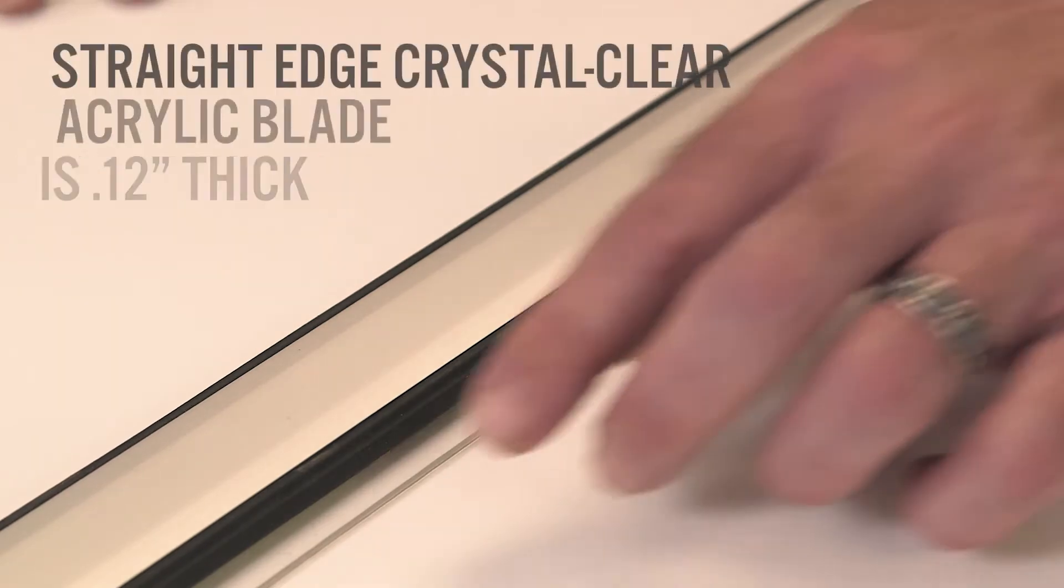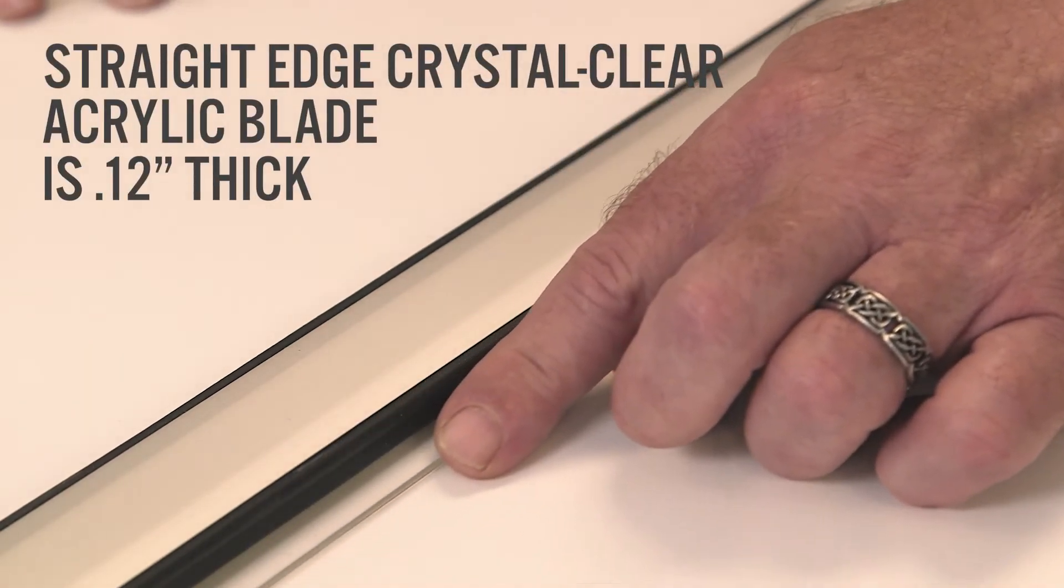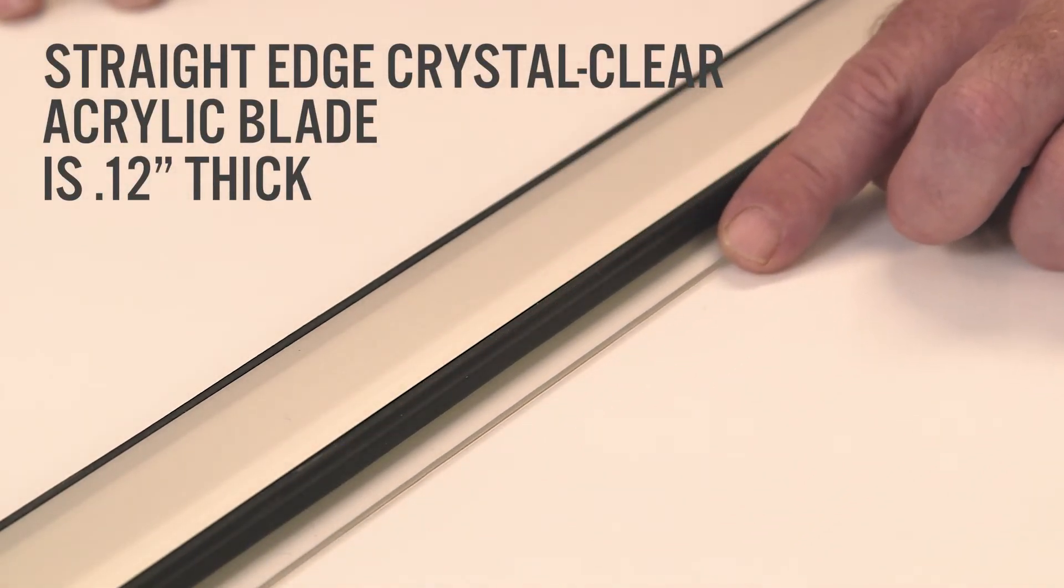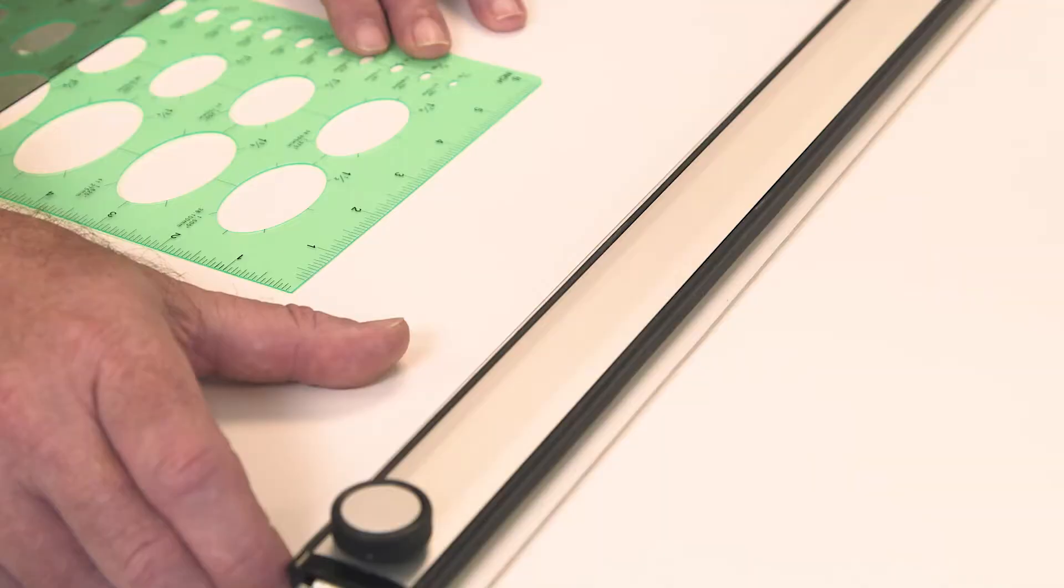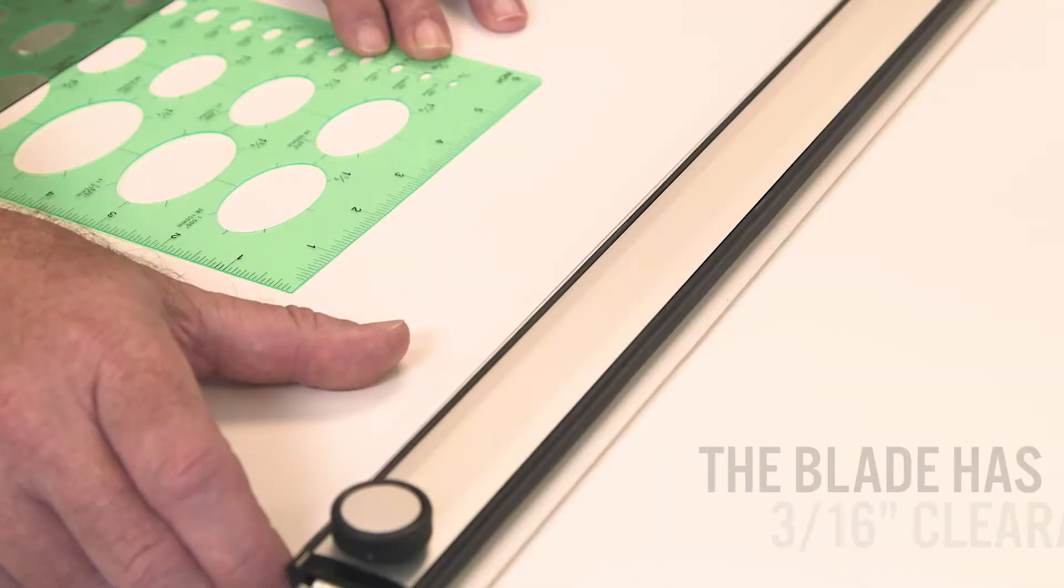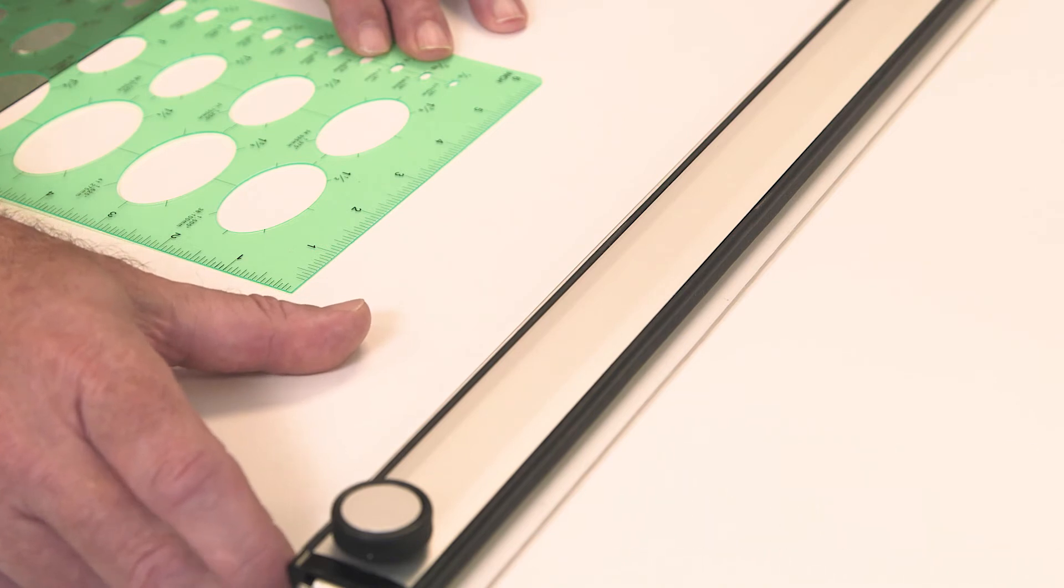The straight edge's crystal clear acrylic blade is 0.12 inches thick and includes inking edges underneath to avoid smudging. The blade also has a 3/16 inch clearance for use with foam board, cutting mats, and templates.